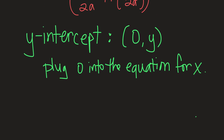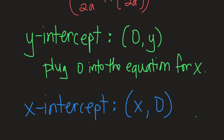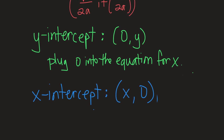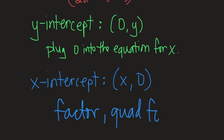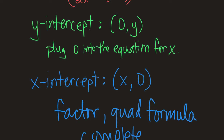In addition to the Y-intercept, we can also find the X-intercepts. The X-intercept has a Y value of zero. To solve for X, you can factor the equation, use the quadratic formula if it's not factorable, or complete the square. There could be one X-intercept, two X-intercepts, or no X-intercepts for your quadratic, depending on how many times it crosses the X-axis.